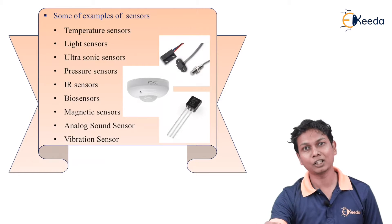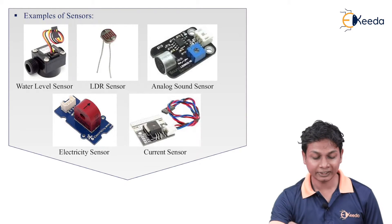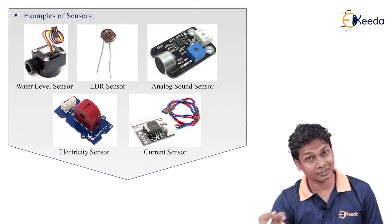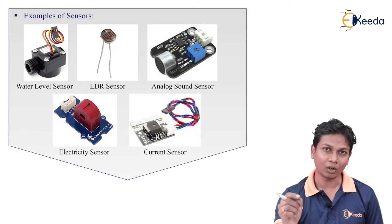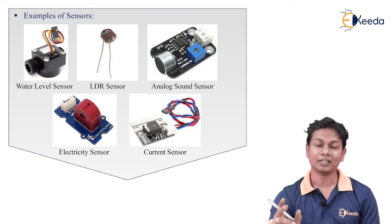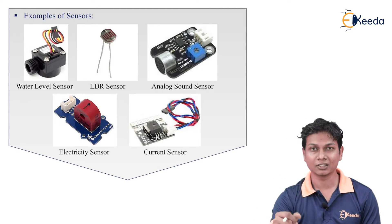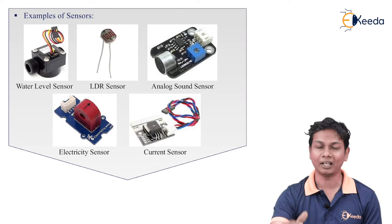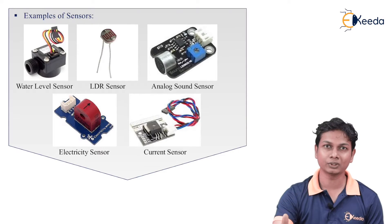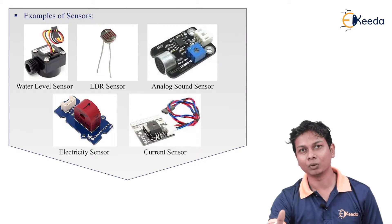Other than this, there are other parameters for sensors like water level sensor, LDR sensor, analog sound sensor, and electricity and current sensor. LDR is a light dependent resistor sensor — depending upon the light falling on that particular sensor, the resistance changes. The analog sound sensor can sense human voice or other prototype sounds. The water level sensor is used in industry as well as in home automation.